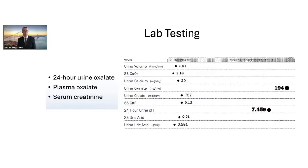Labs to consider include 24-hour urine oxalate levels and plasma oxalate levels — especially important if the patient has advanced kidney disease, where the 24-hour urine oxalate level is less reliable. Elevated plasma oxalate will clue you into a potential PH diagnosis, along with serum creatinine to estimate kidney function. In my own clinic, I diagnosed a patient with PH1 who had a 24-hour urine oxalate of nearly 200 mg per day — normal is 40 mg or less — along with multiple stone events and two siblings who died of kidney disease related to kidney stones.